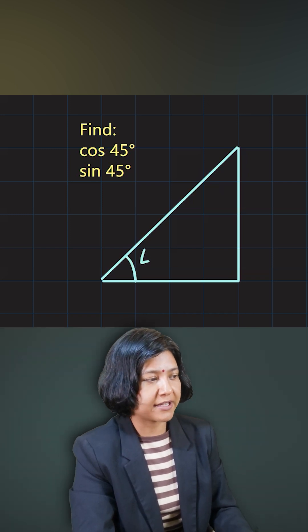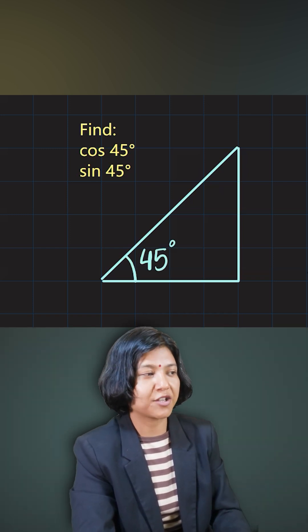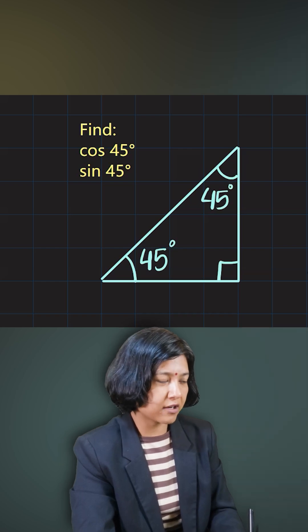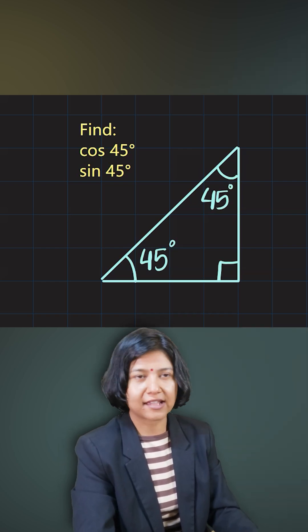Think about one angle being 45 degrees. The best part is the other angle, the other acute angle, will also be 45 degrees, provided the triangle is a right triangle. Now they're asking for cos or sine 45.